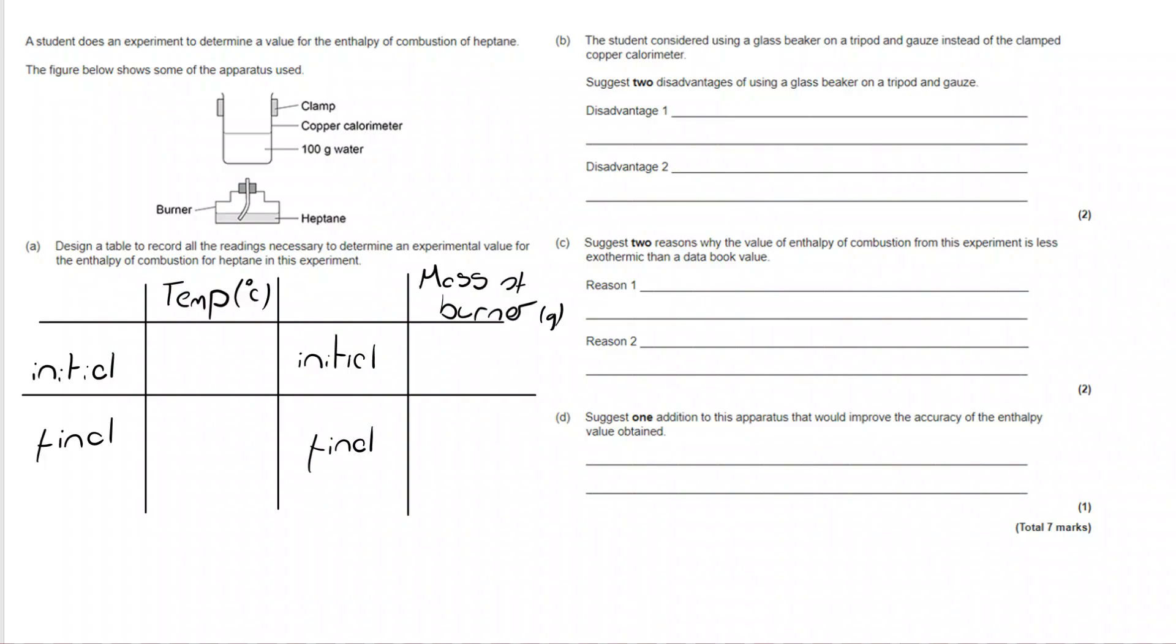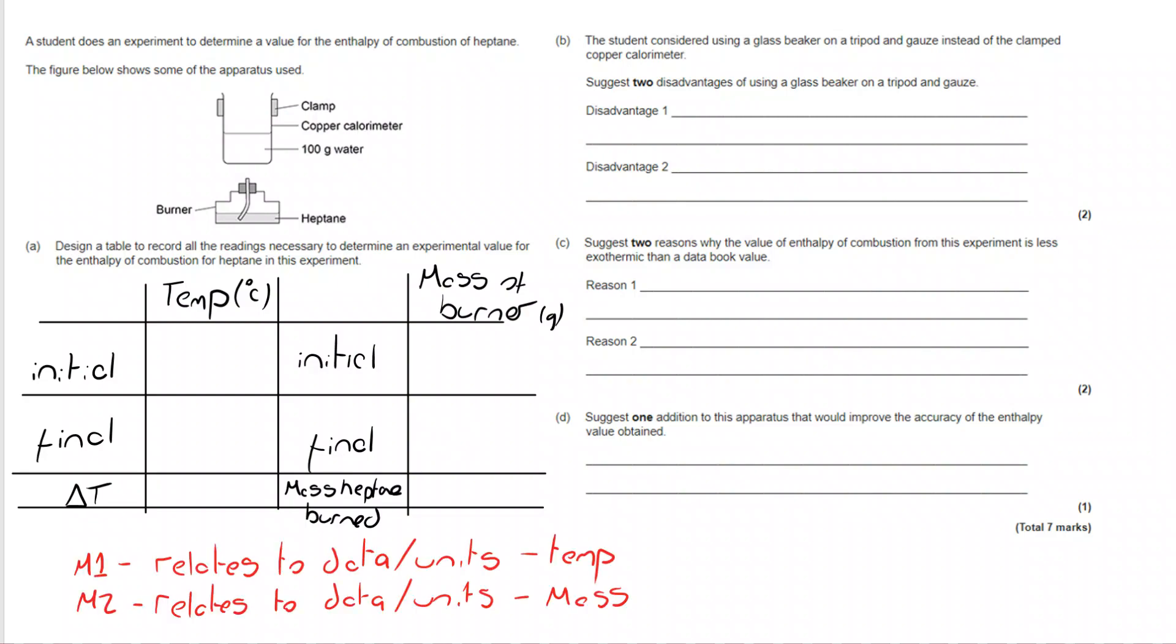Once we've done that, there are still some readings we need to record. We need to know the change in temperature and the mass of heptane burned - the difference between initial and final. So the two marks here: one relating to data and units for temperature readings, and one relating to data and units for mass readings.